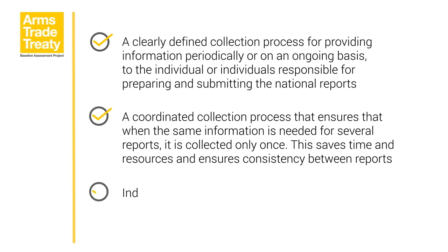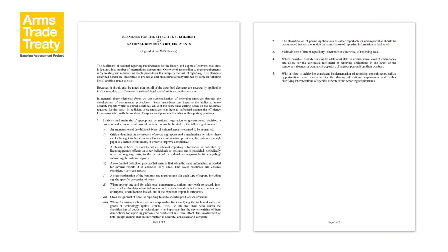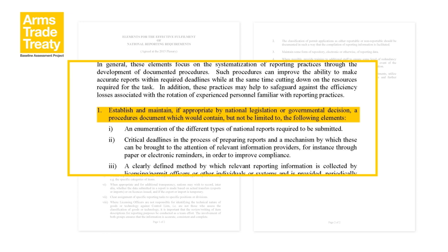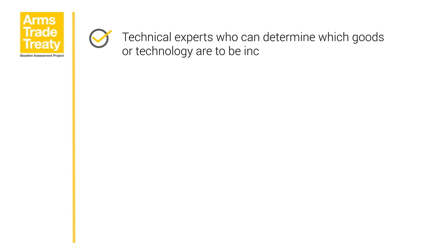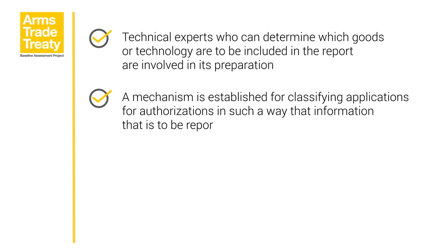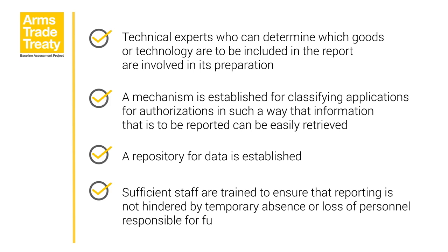The Annex draws upon the Wassenaar Arrangement's elements for the effective fulfilment of national reporting requirements, adopted at the December 2015 plenary meeting. The key recommendation is to establish and maintain, if appropriate by national legislation or governmental decision, a procedures document containing the key elements outlined in the Annex to the 2016 Group of Governmental Experts report. The Wassenaar Arrangement guidance also recommends that technical experts who can determine which goods or technology are to be included in the report are involved in its preparation, a mechanism is established for classifying applications for authorizations so that reportable information can be easily retrieved, a repository for data is established, and sufficient staff are trained to ensure that reporting is not hindered by temporary absence or loss of personnel.